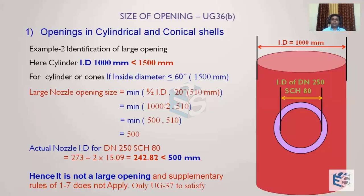This is the simplest way to determine whether an opening is large or normal. If the vessel diameter had been more than 1500mm, the criterion would have changed to one-third of the diameter or 1020mm, whichever is smaller. Also remember: we are considering the nozzle opening — that is, the hole created in the vessel — not the nozzle OD.